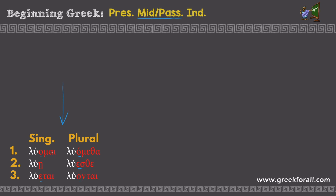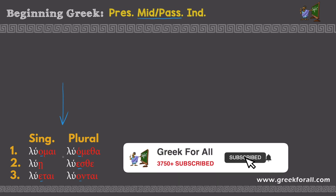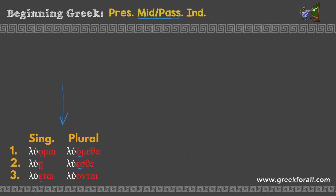The true endings here are: -mai, -etai, -metha, -sthe, -ntai. These endings must be memorized. Whenever you see a Greek word in the text which has one of these endings, you know it is a verb — a present middle passive indicative verb. Now, depending on the ending, we will need to put them into the right person and number and translate them accordingly.